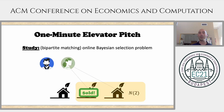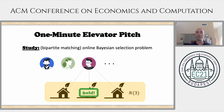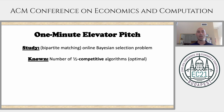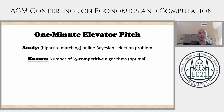Then another buyer shows up and maybe we decide not to sell them any of the houses, to leave room for more lucrative buyers later on, and so on and so forth. Now what's known for this problem is one-half competitive algorithms, and it's known that this is optimal for this problem.